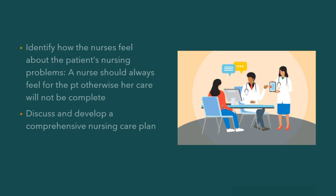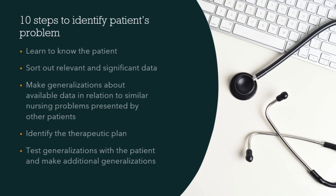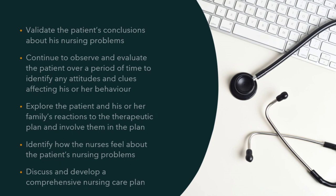To recapitulate, the 10 steps to identify the patient's problem are: learn to know the patient; sort out relevant and significant data; make generalizations about available data in relation to similar nursing problems presented by other patients; identify the therapeutic plan; test generalizations with the patient and make additional generalizations; validate the patient's conclusions about his nursing problems; continue to observe and evaluate the patient over a period of time; explore the patient and family's reactions to the therapeutic plan and involve them; identify how the nurses feel about the patient's nursing problems; and discuss and develop a comprehensive nursing care plan.